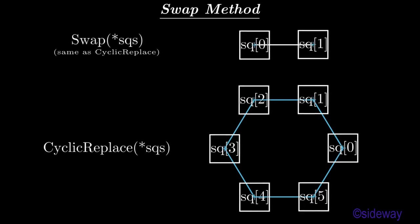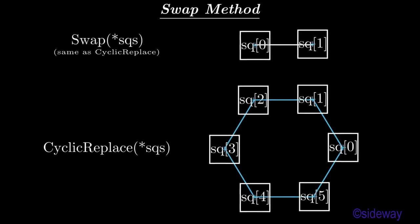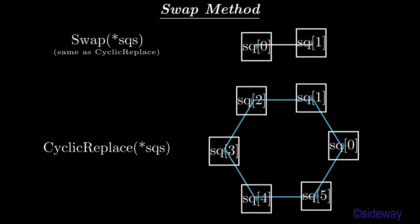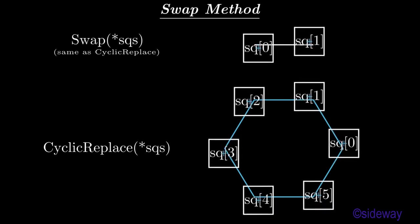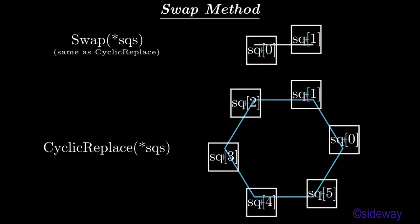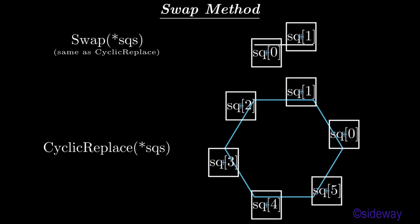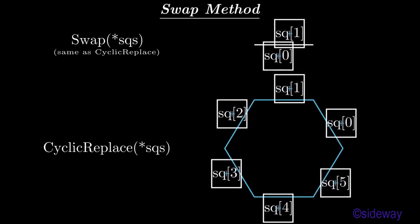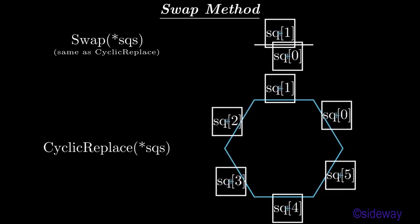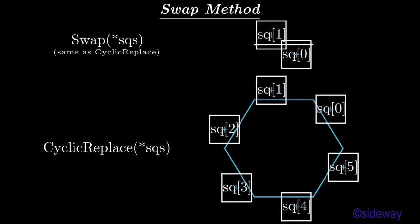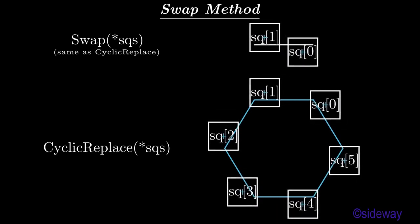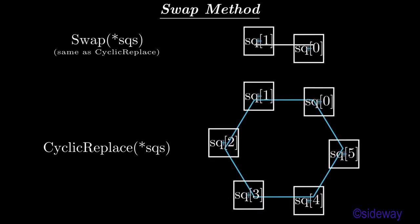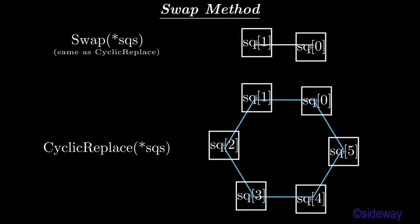Cyclic replace, or swap, method is a special transform method used to transform only the location of a mathematical object through the move to method. For given two mathematical objects, the locations of the two mathematical objects will be swapped. For given more than two mathematical objects, the locations of all mathematical objects will be replaced in a cyclical pattern along the order of the given list.